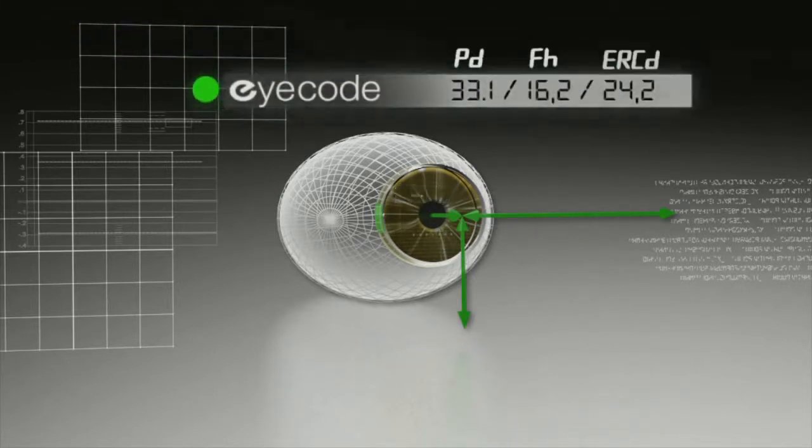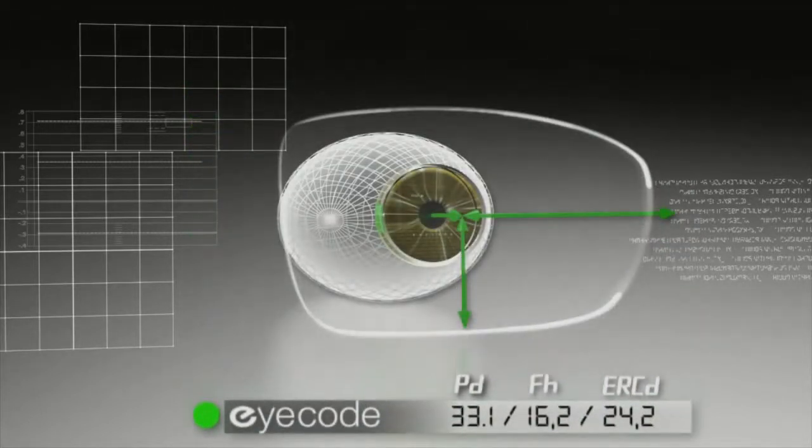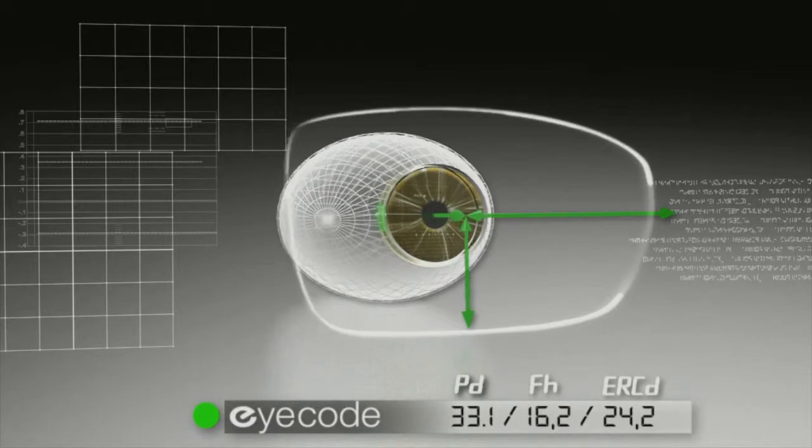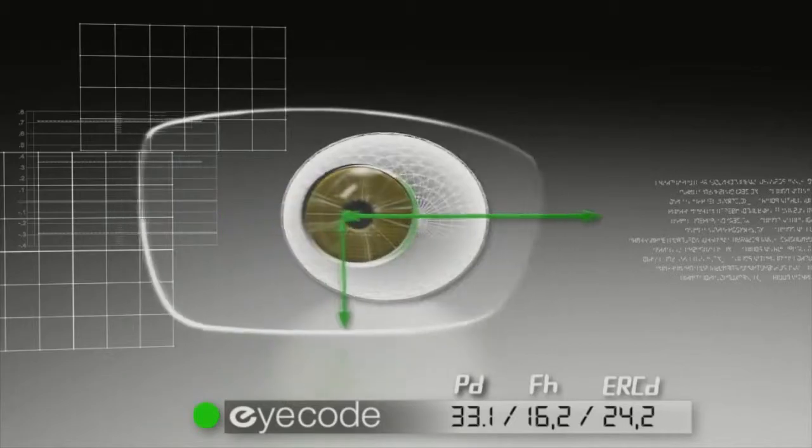These three measurements, PD, fitting height, and ERCD, build the very unique code of each eye, which forms the foundation of lens individualization based on the physiology of each wearer.